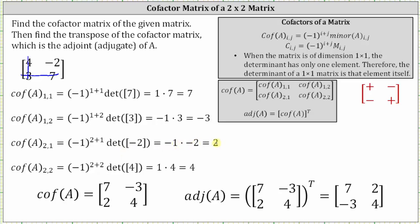Cofactor A sub two comma two is equal to negative one raised to the power of two plus two. And if we eliminate row two, column two, we have times the determinant of the one by one matrix with an entry of four. Simplifying, the fourth power of negative one is one. The determinant is equal to four. One times four is four.